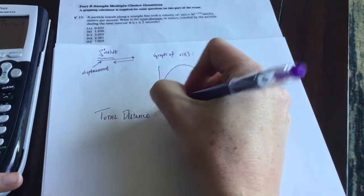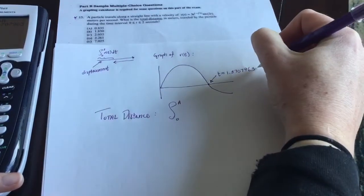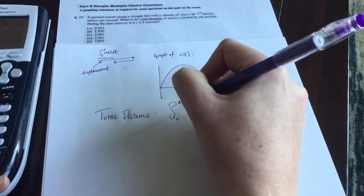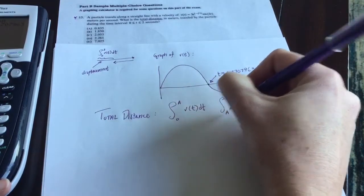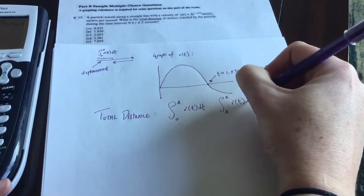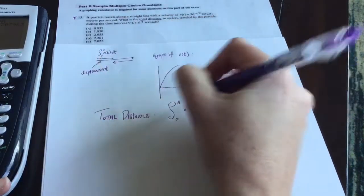Okay, so now let's find total distance traveled. So we do the integral from zero to that A value that we just stored as A, of v(t). And then you do the integral from A to two of velocity.